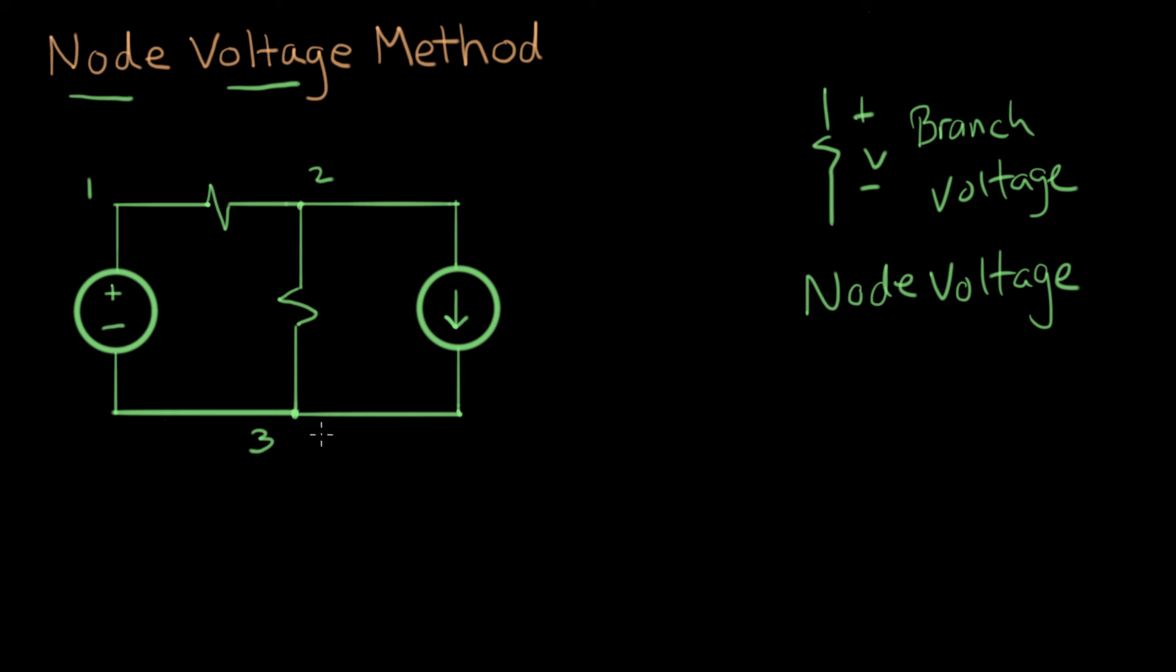To define a node voltage, the first idea we need is to define a reference node. A good choice for the reference node is usually one that's connected to the terminals of the power sources, or it's a node that's connected to a lot of branches, a lot of elements.